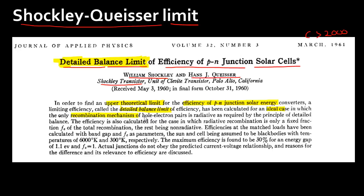This is for an ideal case in which the only recombination mechanism between electrons and holes is radiative recombination. The sun and the cell are assumed to be black bodies with temperatures of 6,000 Kelvin and 300 Kelvin respectively. Under these assumptions, the maximum efficiency they find is 30%, corresponding to a bandgap of 1.1 eV — very close to what you get in silicon.